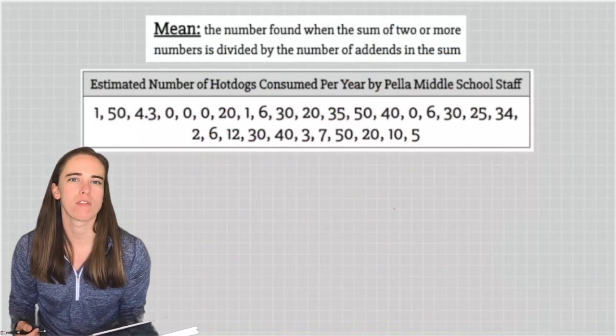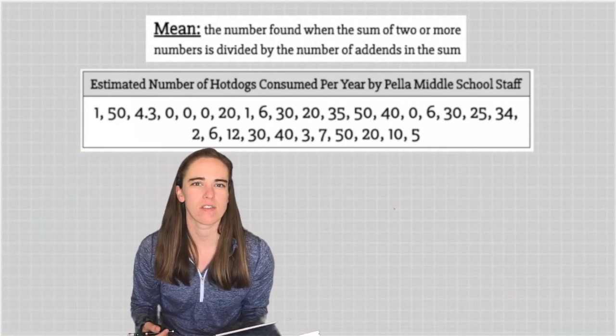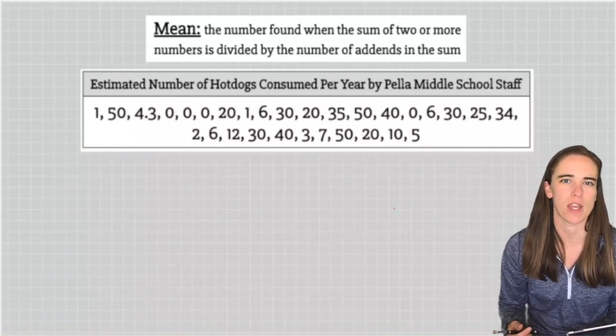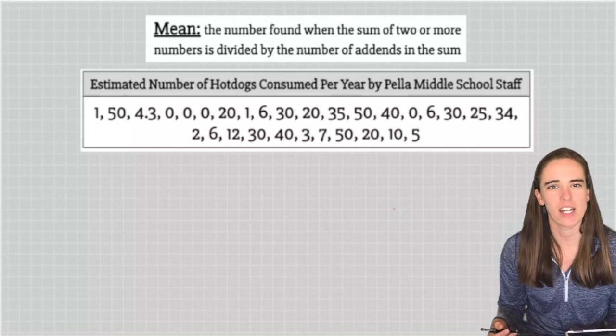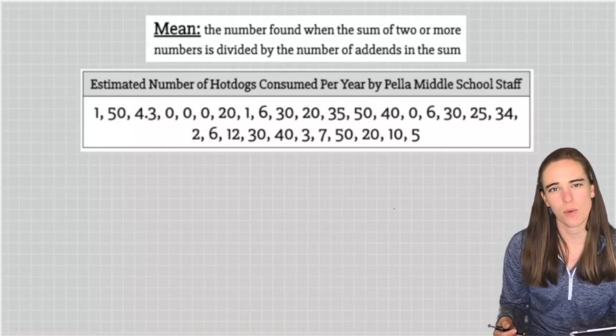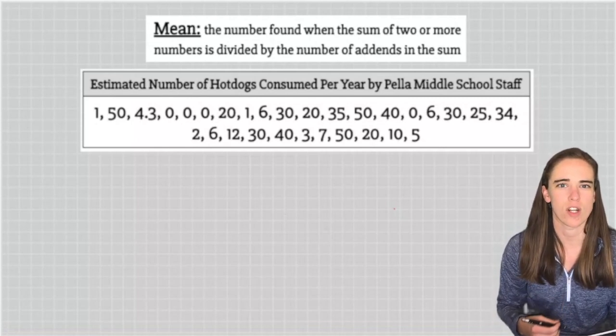The mean is found when we take the sum of two or more pieces of data and then divide by the number of pieces of data that we have. This is really like finding your average. The first thing we need to do for this data set is add all the numbers together.